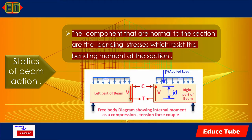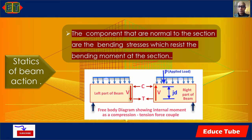The components C and T are normal to the section. These components that are normal to the section are the bending stresses which resist the bending moment at the section. C and T act as a bending stress to resist the bending moments. In the free body diagram we can see the compression C and tension T forces coupled with the lever arm jd, which creates the internal moment M.